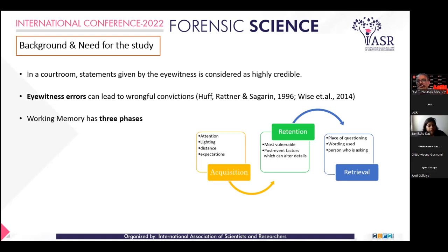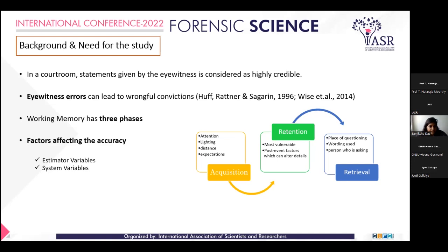When we are exposed to misleading information or any kind of information post the event — by police, prosecutors, media, eyewitnesses, or significant others — that not only alters our memory of the crime but also the face of the perpetrator. There are different factors that affect the accuracy, which can be grouped into two variables: estimator variables and system variables.